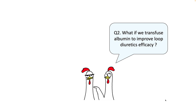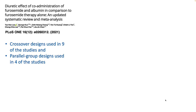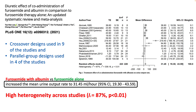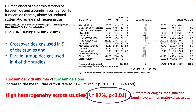What about transfusing albumin along with diuretics to improve efficacy? We do have a meta-analysis performed recently which included around 13 studies, and it did find that furosemide with albumin has increased urine output compared to furosemide alone. However, the study was very heterogeneous — meaning the populations studied were very different amongst the studies, differing in etiology, renal function, albumin levels, and inflammatory diseases like sepsis. High heterogeneity reduces the validity of a meta-analysis.